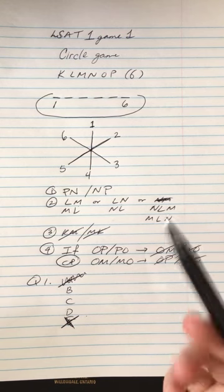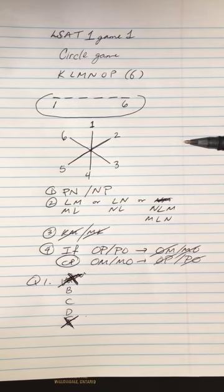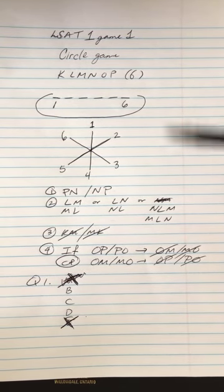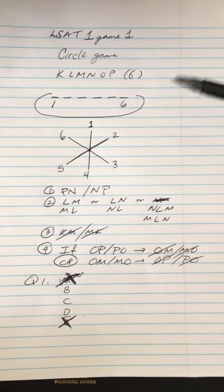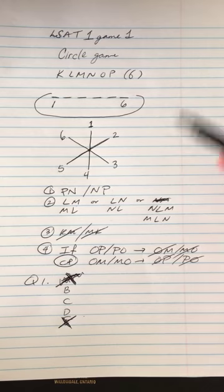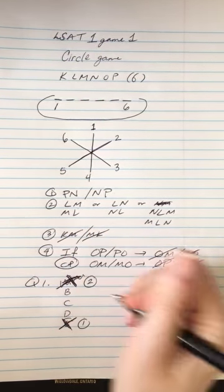So A breaks that rule, right? So there L is next to O. It's also next to K because the sixth position and the first position are next to each other. So A is out. So E breaks rule one, A breaks rule two.